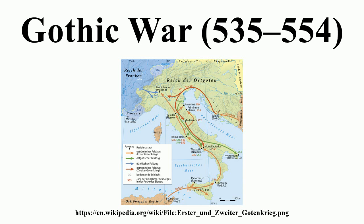Belisarius, to his credit, did not allow matters to reach a full breach, and instead marched with Narses and John against Urbinum. The two armies encamped separately, and shortly afterwards Narses, convinced that the town was unassailable and well supplied, broke camp and departed for Ariminum. From there he sent John to Aemilia, which was quickly subdued. Nevertheless, aided by the fortunate drying up of Urbinum's only water spring, the town fell to Belisarius soon after. At any rate, the Roman army in Italy now followed two different commanders, and the results of this disunity were to become tragically clear in the failure to relieve Mediolanum.